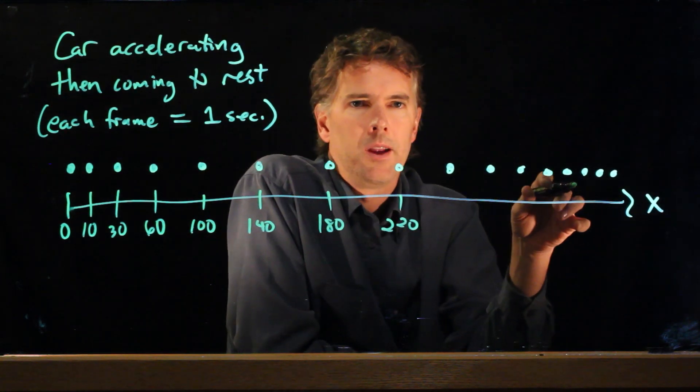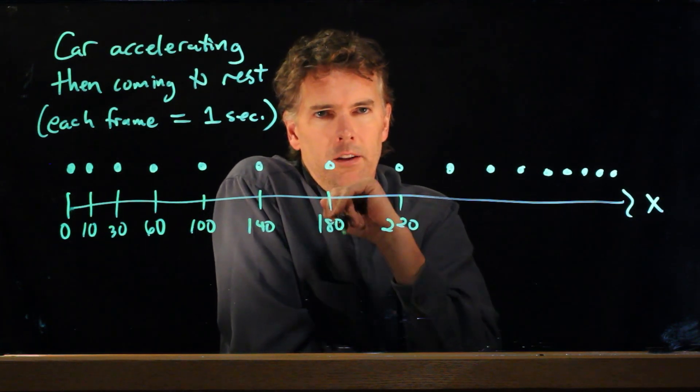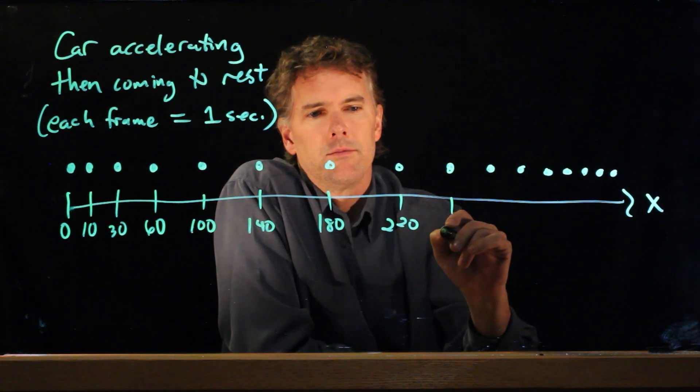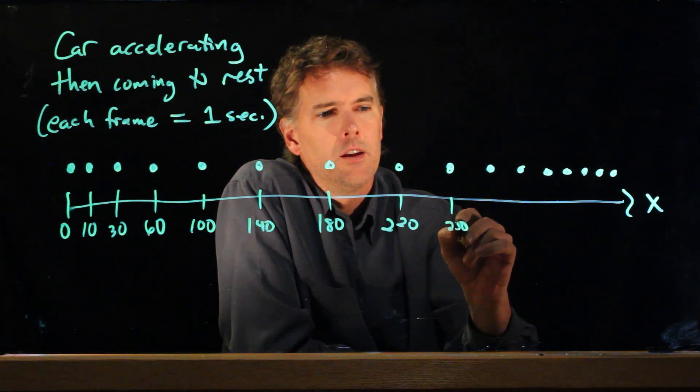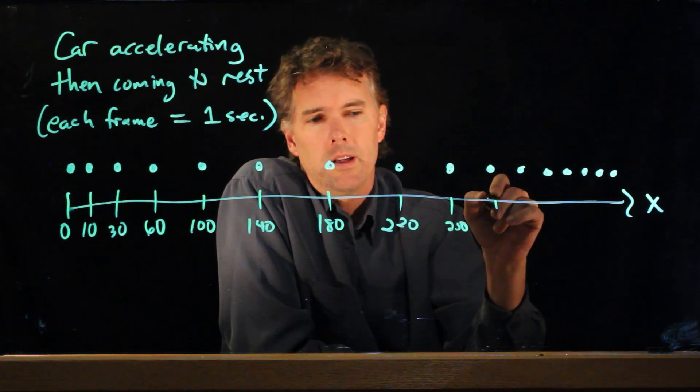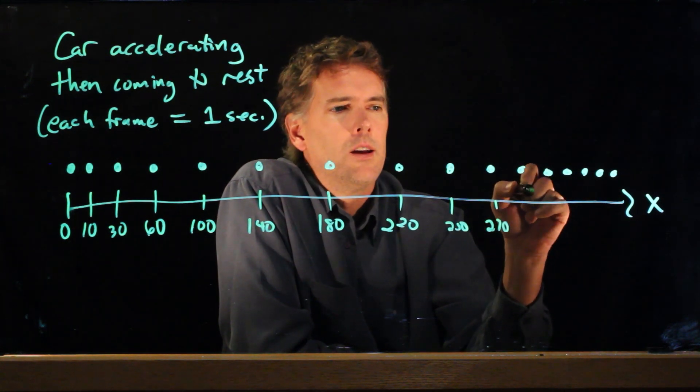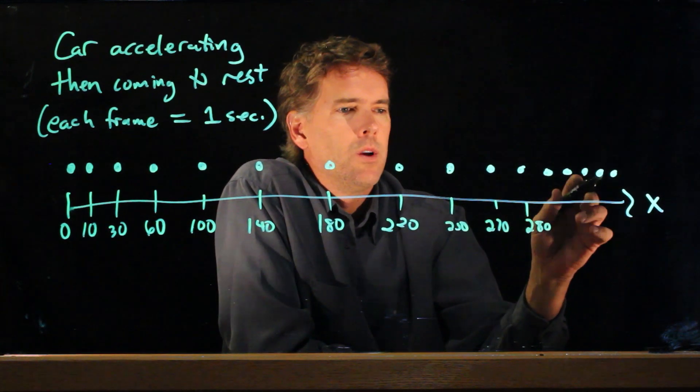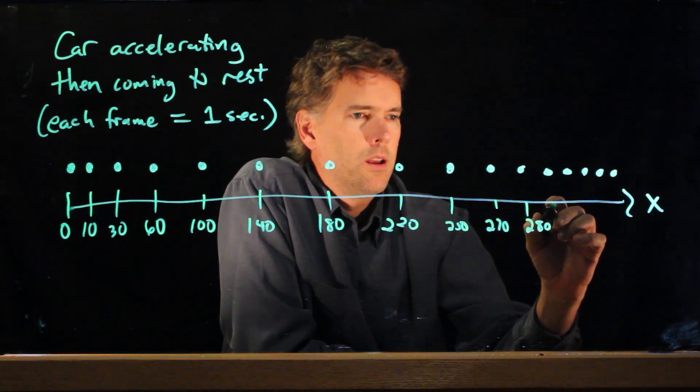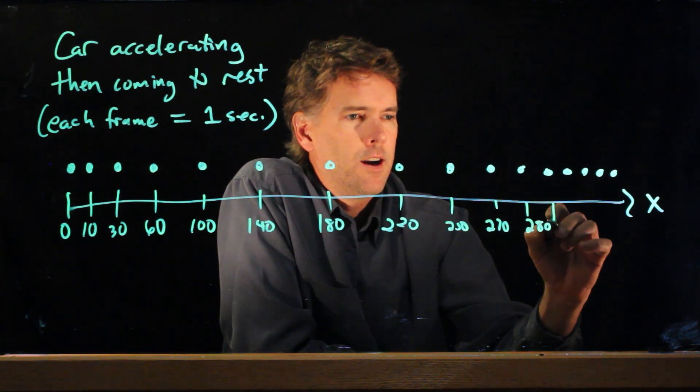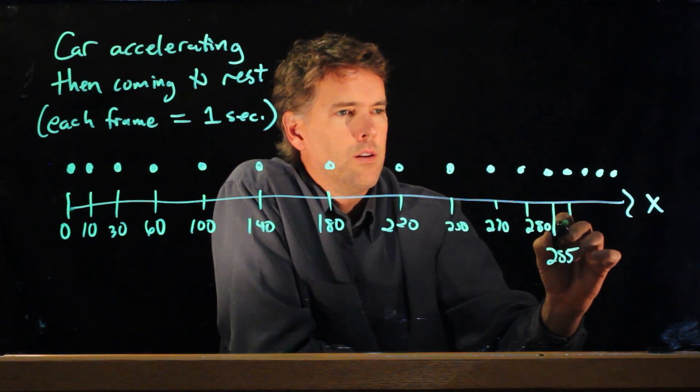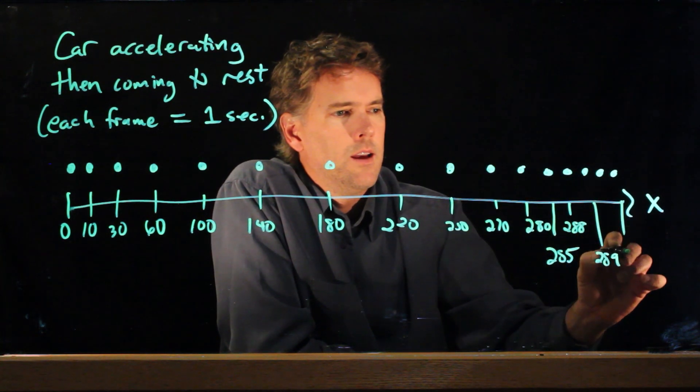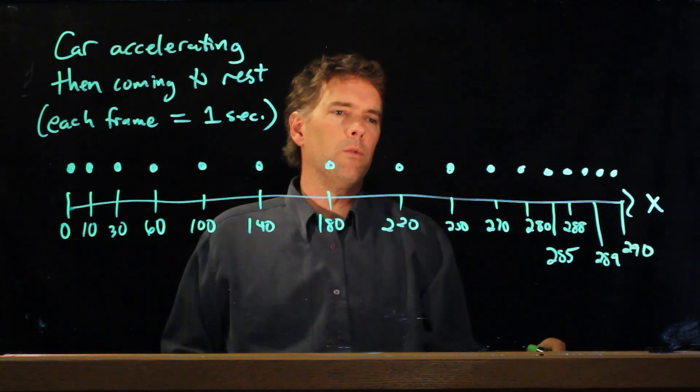And now we are starting to slow down. And so in each time interval, our delta x isn't quite as far anymore. So maybe this is more like 30 again. So 220 plus 30 is 250. And now this is maybe like 20. So this would be 270. And maybe this is more like 10. So that's 280. And now we really start to sort of slow down rather quickly. This is maybe 285, 288, 289, and let's just pick an ending point. We'll say it's 290.